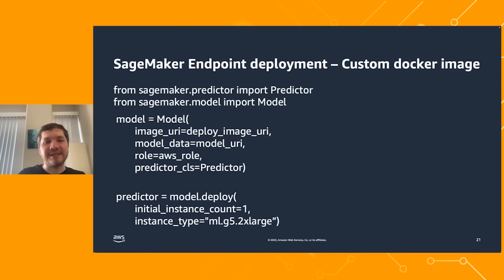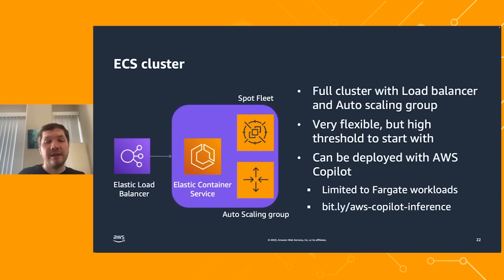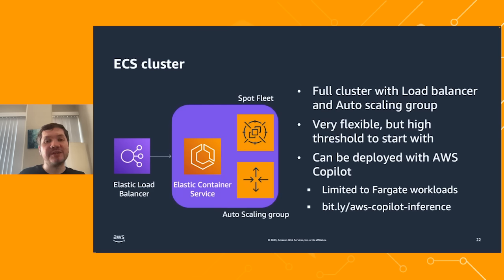Now let's cover ECS cluster and AWS Lambda. With ECS cluster, you get a classic cluster with different machines, a load balancer, and an auto scaling group. It's very flexible but usually has a high threshold to start with. The advantage is that it can be deployed with AWS Copilot, which manages all the infrastructure for you. The limitation is that it's limited to Fargate workloads.